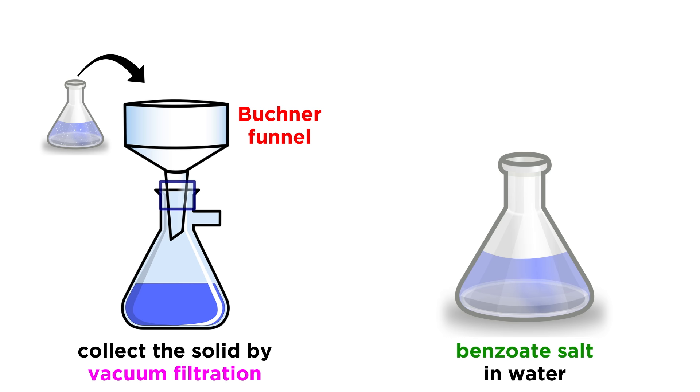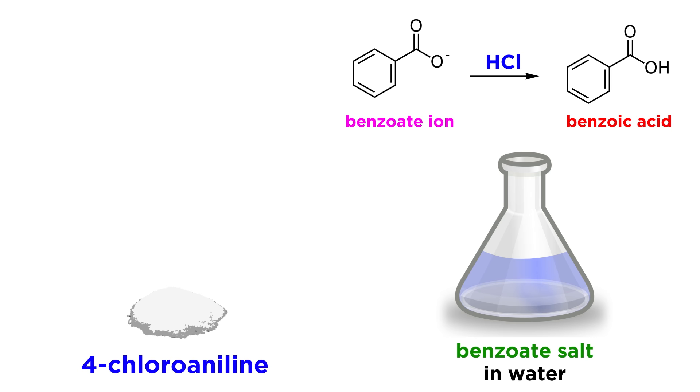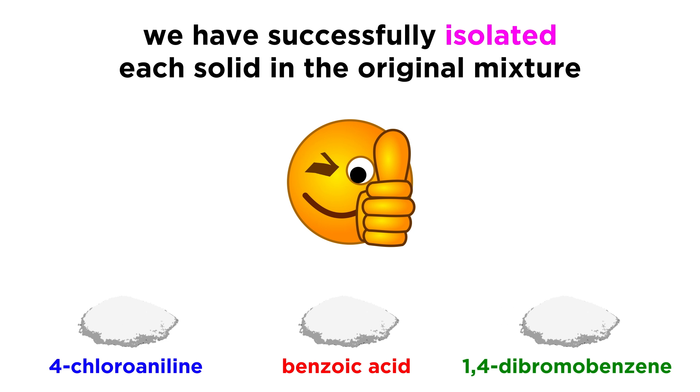Then we can do the same thing with the benzoic acid salt, except here we need a strong acid to protonate it. So to this flask, let's add some HCl, watch benzoic acid precipitate, check for a pH of around 2 to ensure that this is complete, and then collect that in a Buchner funnel as well. And there you have your three solids completely separated.